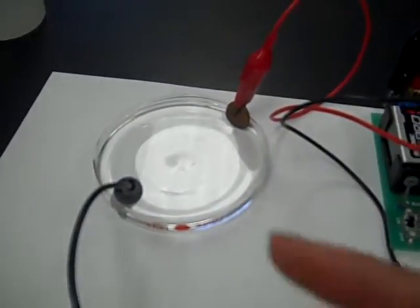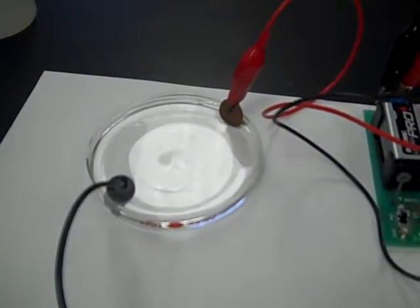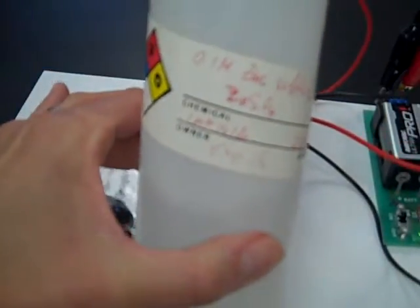The zinc metal is the anode, connected by the black wire. Inside the solution in the Petri dish, the solution is zinc sulfate.